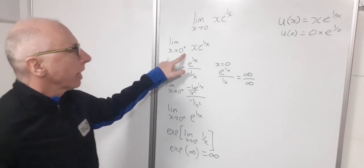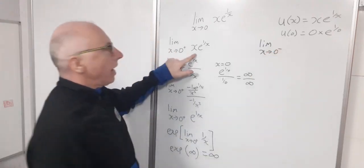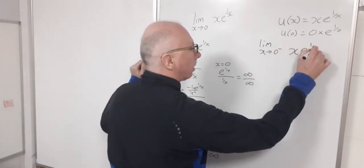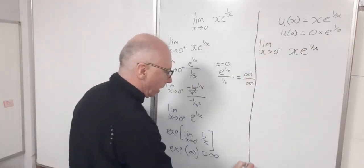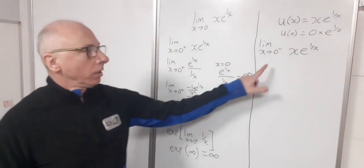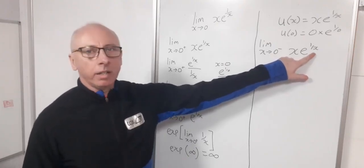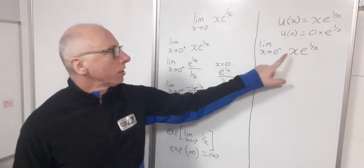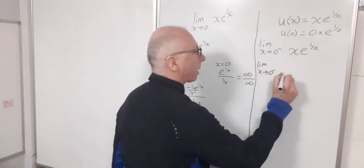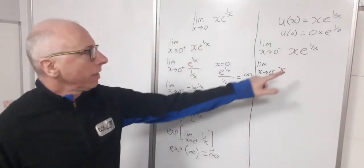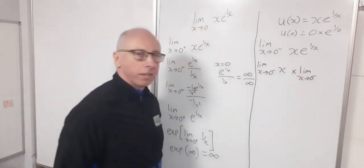Now let's find the limit from the negative side: the limit as x approaches 0 from the negative side of x·e^(1/x). I'm going to split this into two separate limits — the limit of x as x approaches 0 from the negative side, multiplied by the limit of e^(1/x) as x approaches 0 from the negative side.